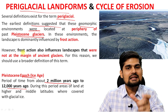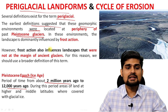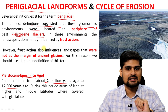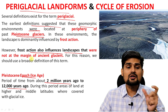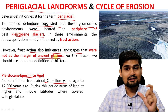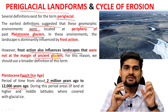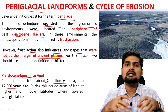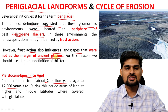However, it's not that all periglacial areas were only in the nearby zones of these glaciated areas, because frost action also influences those landscapes which were not at the margin of these ancient glaciers. So for them also, periglacial areas exist. This means there has to be a broad framework — not just Pleistocene glaciation and its surrounding area as periglacial areas. Rather, any area in the periphery of any other glacier as well can be part of periglacial areas.